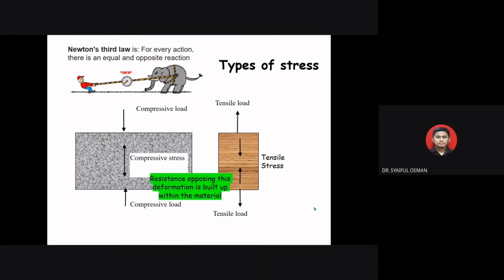Every time we apply a loading to a material, the resistance that opposes deformation is built up within the material. This obeys Newton's third law — for every action there is an equal and opposite reaction. For example, when we apply compressive loading to a concrete block, compressive stress develops within the material. When we apply tensile loading to a wooden specimen and pull it apart, tensile stress develops within the material.